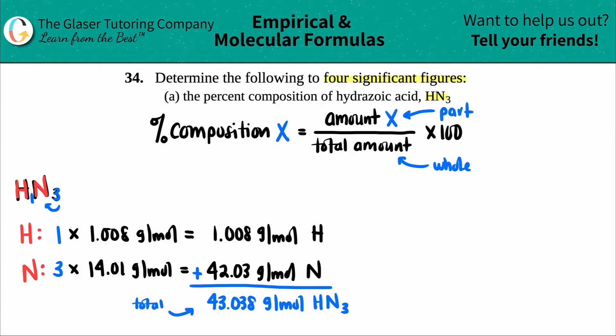Okay, so we got to find the percent composition for both elements. Let's start with the first one. Percent hydrogen equals the amount of that element, so the amount of hydrogen over the total amount times 100. Here was the total amount for hydrogen. So in this case, it would be 1.008 divided by the total amount, which is 43.038, and then I times that by 100.